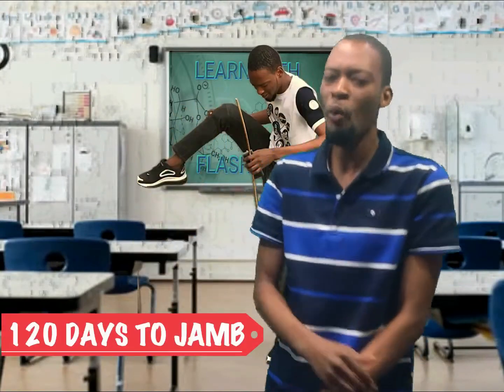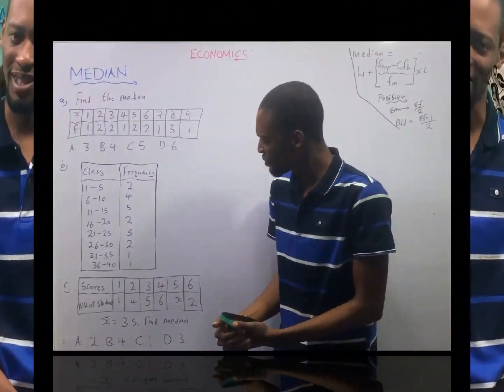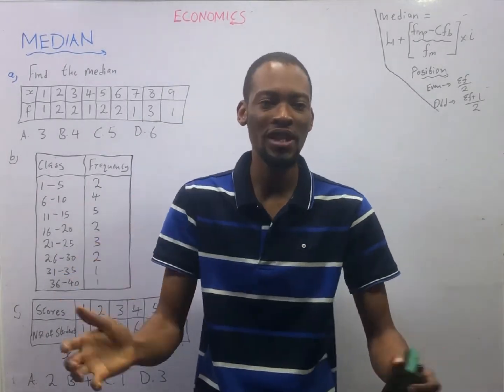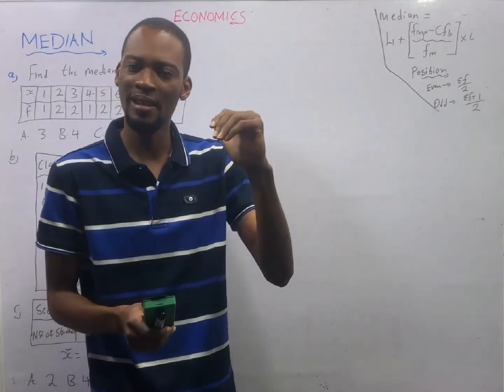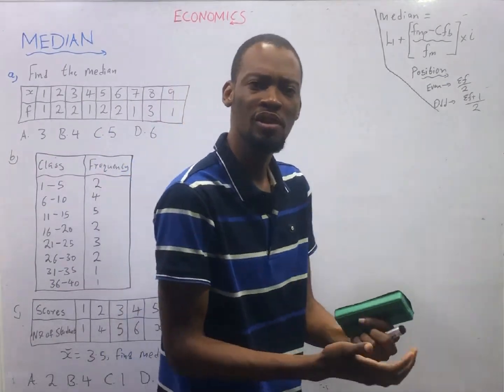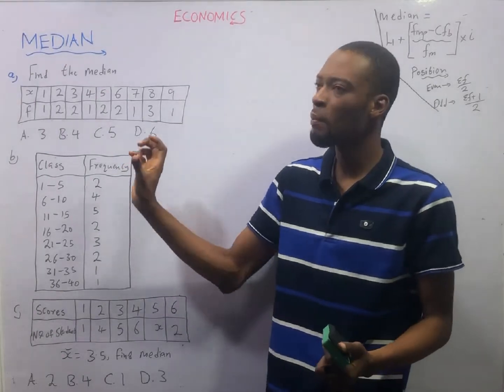I am doing this with the help of the Flash Learners JAMB app and a series on YouTube according to JAMB syllables tagged '120 Days to JAMB with Flash Isaac.' In this episode we shall be looking at the various ways JAMB sets questions under economics and how to answer them perfectly. I shall be taking you through a step-by-step procedure to answer any question under economics and under median in JAMB.